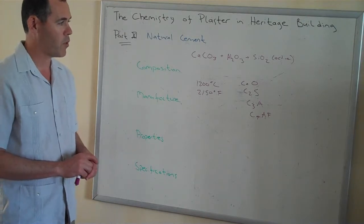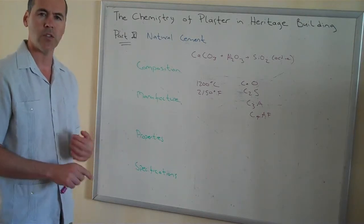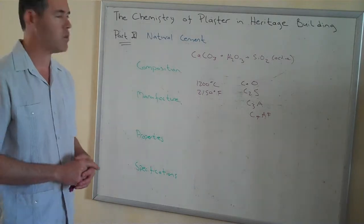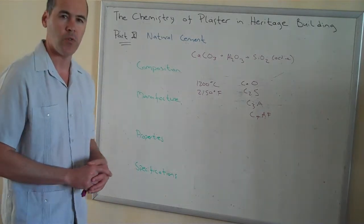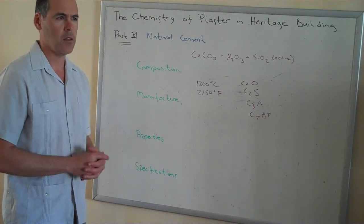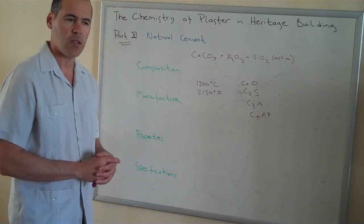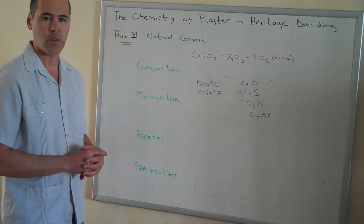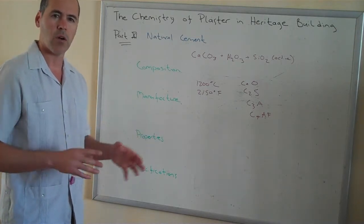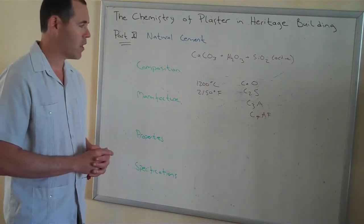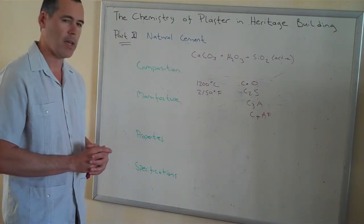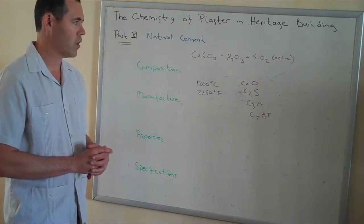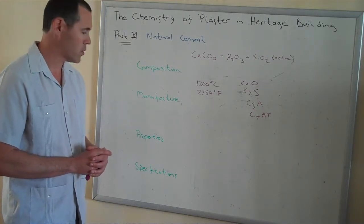For example, the Panama Canal was made with natural cement, as was the base of the Statue of Liberty and the footings for the Brooklyn Bridge. Basically most sea works, lighthouses, and that type of thing from the 18th and early 19th century — you can almost assume they were made with natural cement.